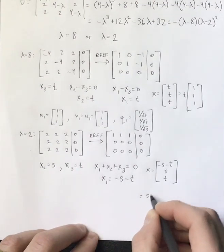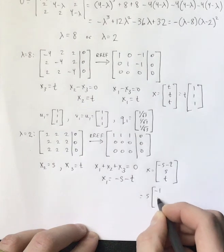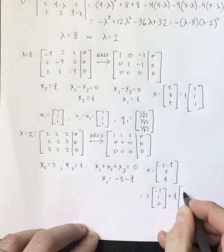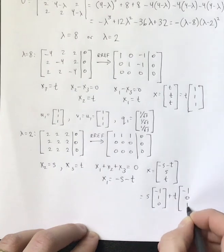And you can see that this is going to require two vectors for this. I'll go ahead and write that as S times negative 1, 1, 0 plus T times negative 1, 0, 1.